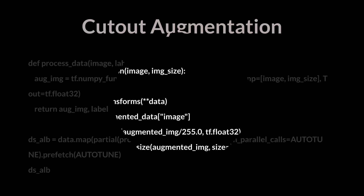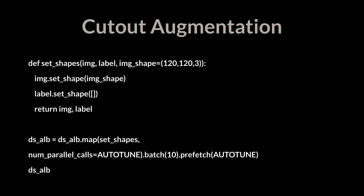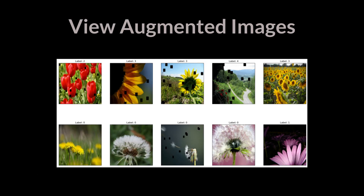The augmented images are generated with the same class label as the input image. We then set the shape of both the augmented image and class label, and here we can see the results of cutout augmentation.